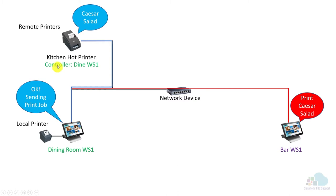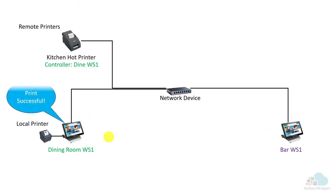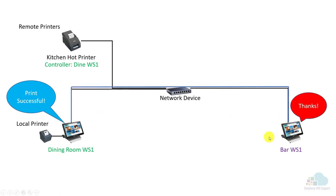I know this looks a little over-complicated but it's important for you to understand how the system works so you can troubleshoot different issues. If you send your caesar salad print job from the bar workstation and don't get a ticket, it might be an issue with the print controller on the other workstation, or it might be an issue with the communication between that workstation and the printer itself. So when troubleshooting, check both. First check the printer — does it have paper, power, is it working? Then check the workstation to make sure it can communicate both to the printer and to the other workstation. If the print job was successful, the workstation will acknowledge that it printed successfully and send an update back.